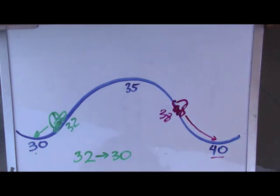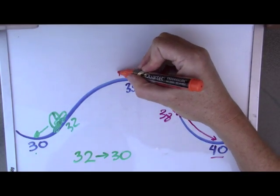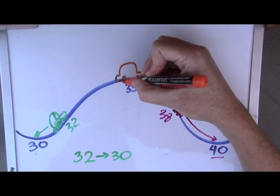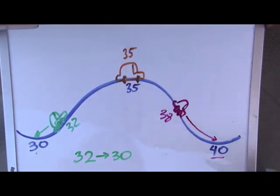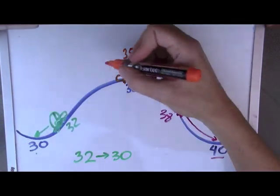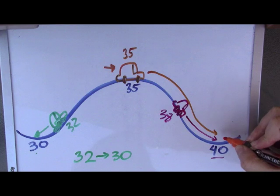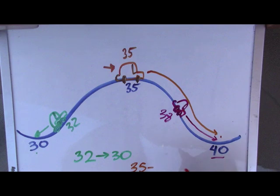Now what would happen if we had a number that was right on top of the hill, a number that ended in five, like thirty-five? We're going to put our car right on top of the hill at thirty-five. When this happens, all we need to do is give it a little push with our finger forward and then it'll just go down the mountain and land on forty. Thirty-five rounded to the nearest tens place is forty.